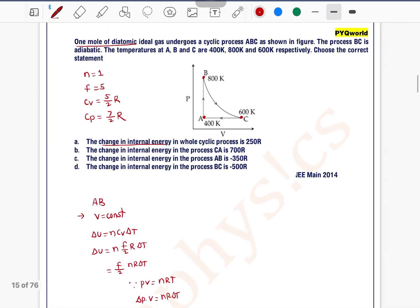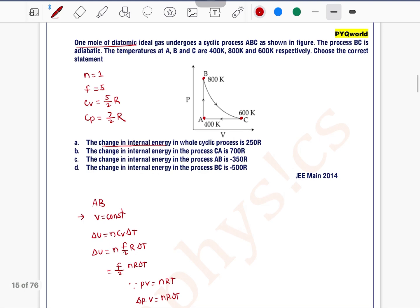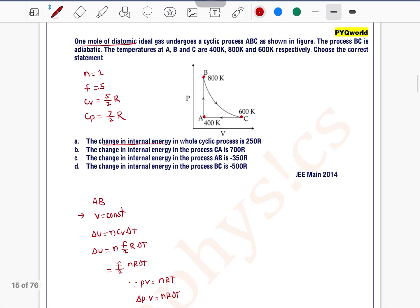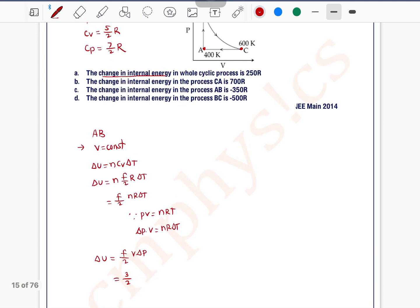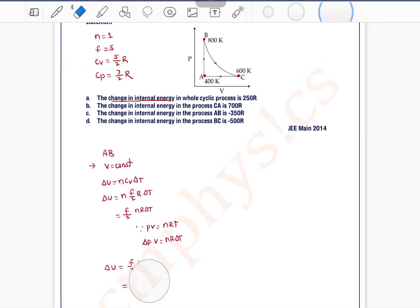Is the volume given or not? No. Temperature is given, so there is no need to use this formula. Directly you can use delta U equals n Cv delta T. N is 1, Cv is 5 by 2 R, and delta T is 800 minus 400 equals 400 by 2. 400 by 2 is 200, 200 into 5 is 1000 R. So in process AB, delta U equals 1000 R.